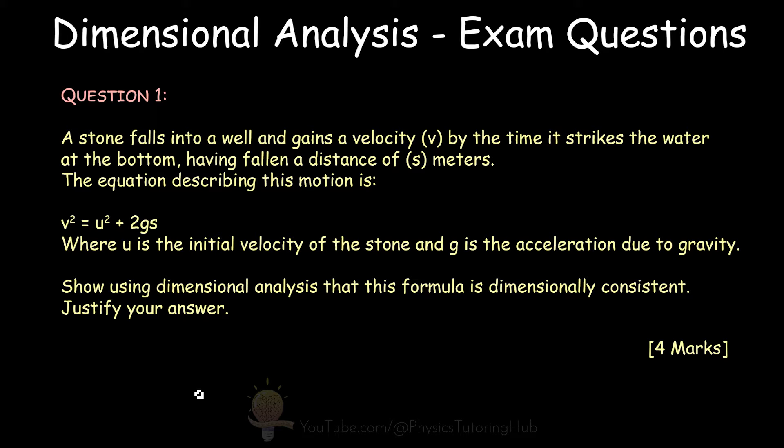Let's start with the first question. A stone falls into a well and gains a velocity of V by the time it strikes the water at the bottom, having fallen a distance of s metres. The equation describing this motion is V squared equals U squared plus 2GS, where U is the initial velocity of the stone and G is the acceleration due to gravity. Show using dimensional analysis that this formula is dimensionally consistent and justify your answer.